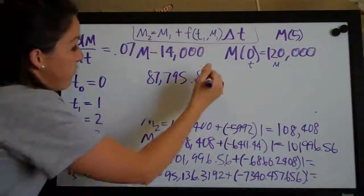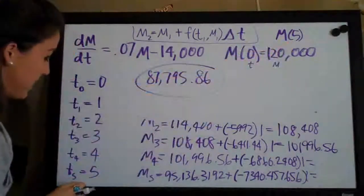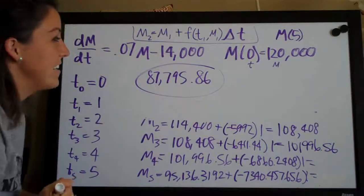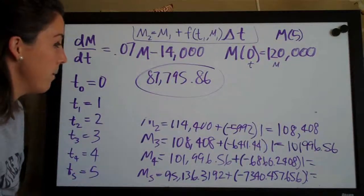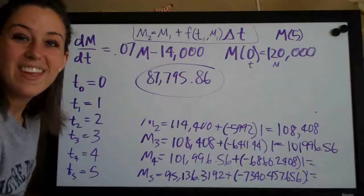So this is our final answer here. We estimated m of 5 or where t is equal to 5 and this is the answer for m. So that's it guys, kind of tedious but pretty simple in the end as long as you can remember this formula here. Thanks, see you next time.